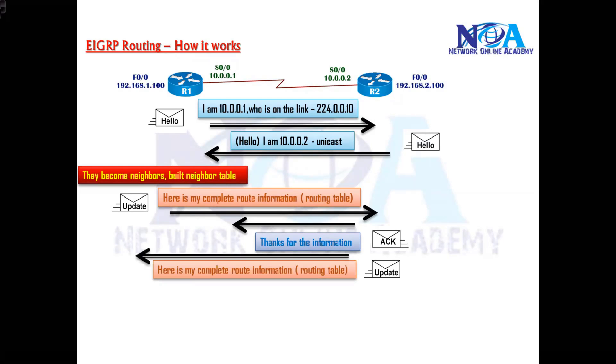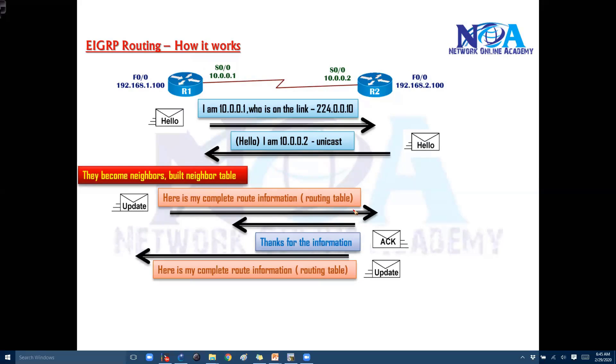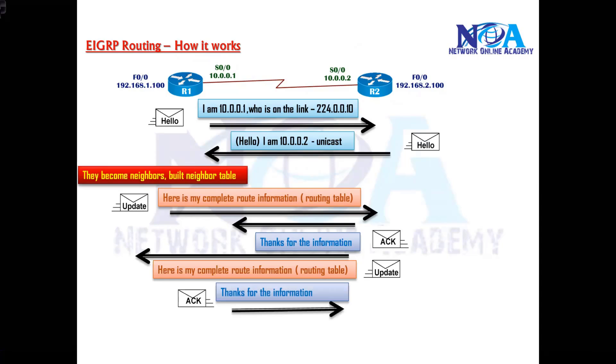Likewise the same thing happens from the other side as well. Now router 2 also will be having some networks it is connected to including its own network. So it's going to send out its best route to reach that particular network and then it's going to send out an acknowledgement. So this is what happens in the second step.